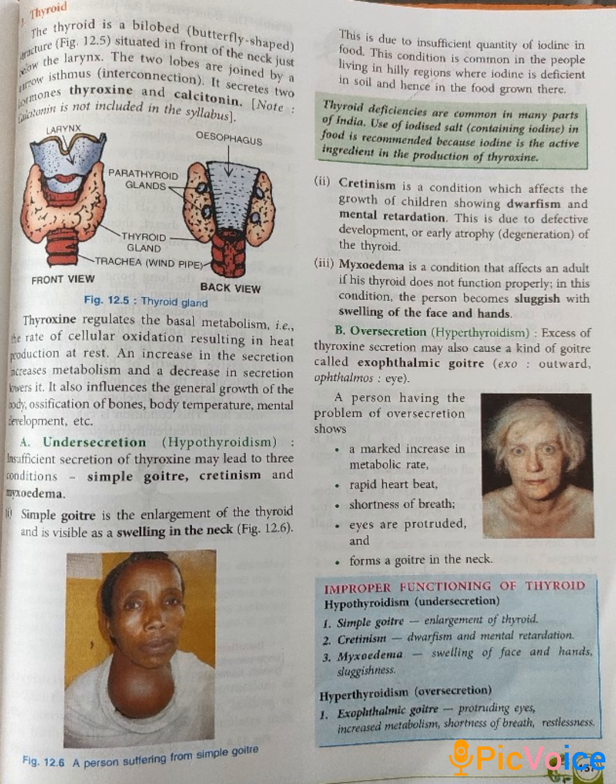First, under-secretion of thyroxine is known as hypothyroidism. Insufficient secretion of thyroxine leads to three conditions: first is simple goiter, second is cretinism, and third is myxedema. We will read all three in detail.